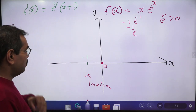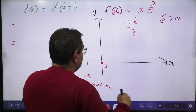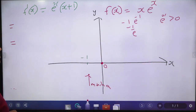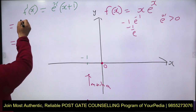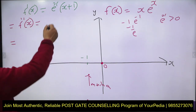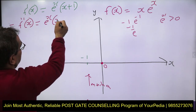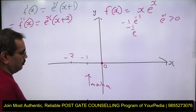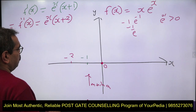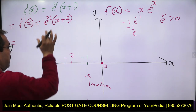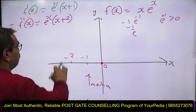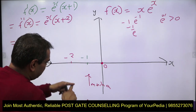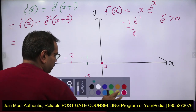Next, check concavity by computing the second derivative. Using the product rule: f''(x) = eˣ(x + 2). The important point here is x = -2, which is the inflection point. For x < -2, f''(x) is negative so concavity is downward. For x > -2, f''(x) is positive so concavity is upward.